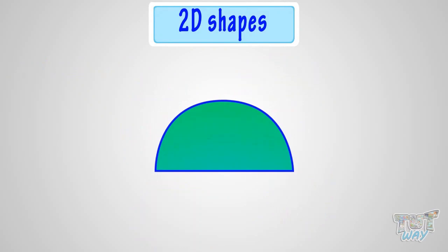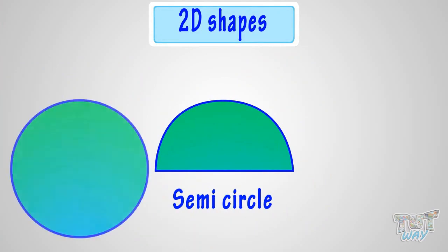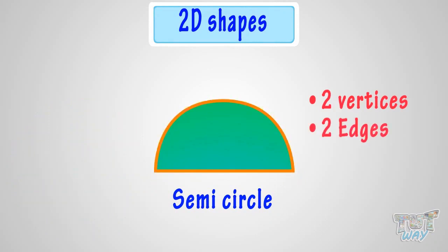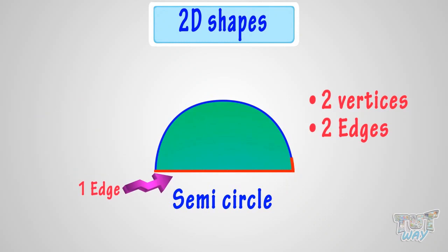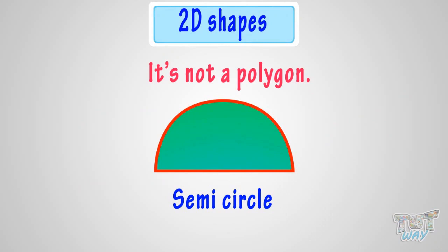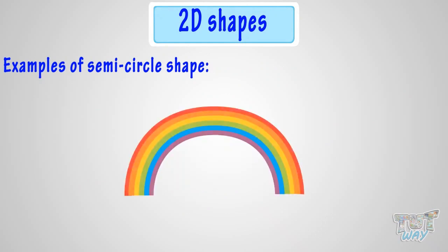This shape is called a semi-circle. It is exactly half of a circle. It has two vertices and two edges: one straight edge and one curved edge. So remember, it's not a polygon. Think of things that are semi-circle in shape — these are various things that are semi-circle in shape.